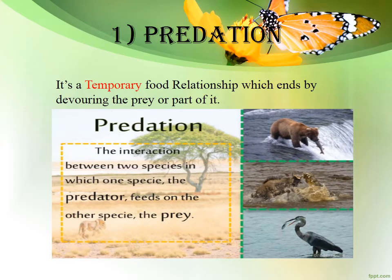Let's start with predation — the first type of food relationship. It is a temporary food relationship. It ends by devouring the prey or part of it. Temporary means mu'akkata. So the food relationship between the predator and the prey is a temporary relationship.